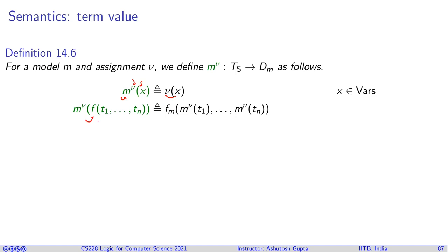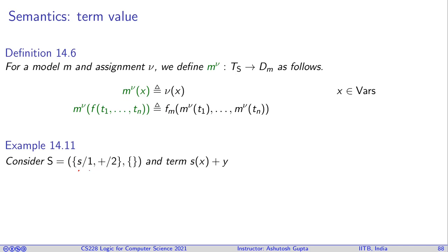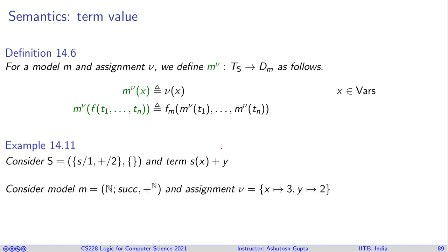If the term is a function application, we interpret each sub-term t1 through tn under the model and assignment to get values, then apply the model's interpretation of that function to those values to get the result. For example, consider a signature with functions s (successor) and plus, with domain the natural numbers, and assignment x = 3, y = 2.